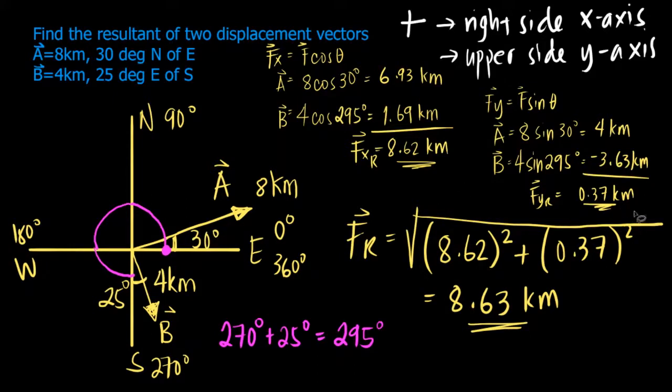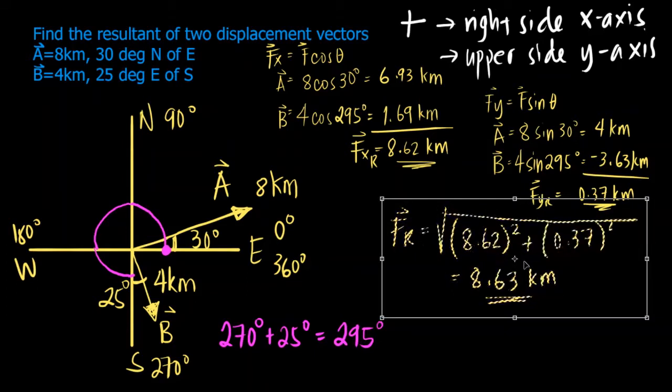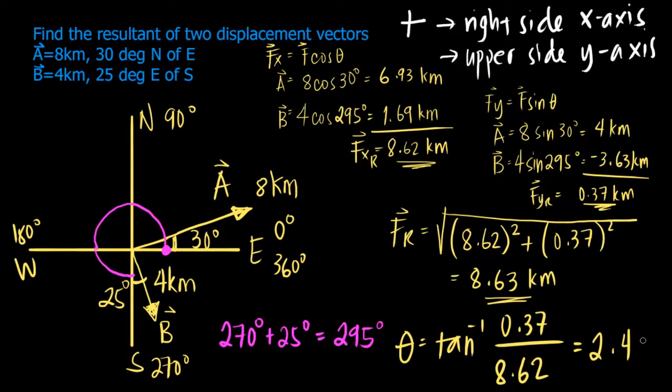But what is its angle or direction? So theta is equal to arctan y over x. The y is 0.37, the x is 8.62, which makes it arctan 0.37 divided by 8.62. That is 2.46 degrees.